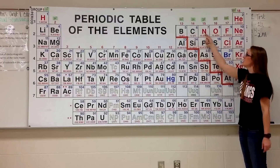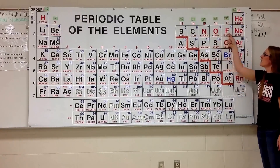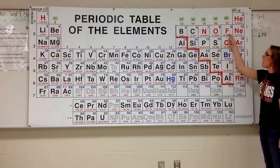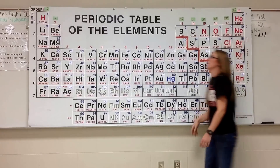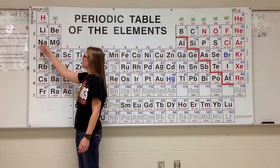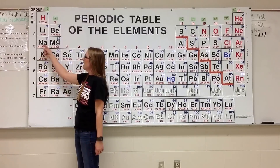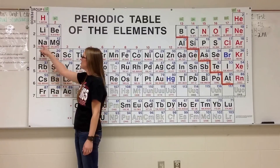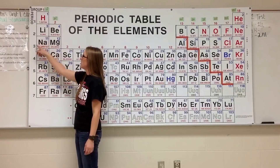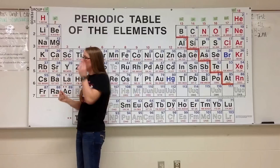Nitrogen is 2p3. Oxygen is 2p4. Fluorine is 2p5. Neon is 2p6. Moving on to sodium, it's in my third energy level. Its highest electron is in the 3s1 location — third energy level, S orbital, 1 for its first electron.